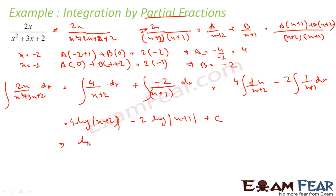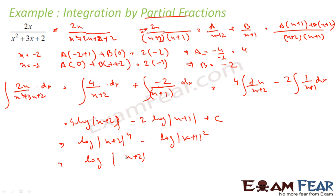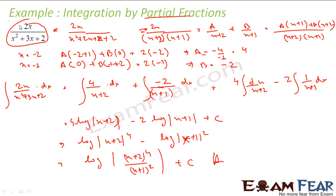We can simplify the answer further: 4·log|x + 2| − 2·log|x + 1| becomes log|(x + 2)⁴ / (x + 1)²| + C. That is the final answer. Very simple — the key step is just recognizing the pattern A/(x + 2) + B/(x + 1), finding A and B, and solving.